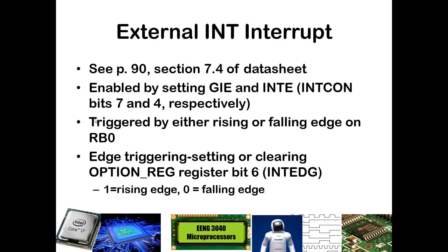The external interrupt can be read about in section 7.4 of the datasheet on page 90. It is enabled by setting the INTE bit and the GIE. Once both bits are set, when you have an interrupting event on port B bit 0 — either a rising or falling edge, as determined by bit 6 of the option register — you will trigger an interrupt and go to the interrupt service routine to handle it.